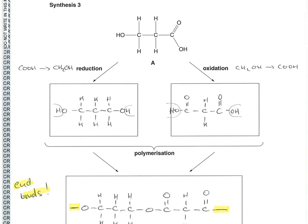Synthesis 3 tells you that starting with molecule A, we're going to reduce it and oxidize it. I've made a little note to myself - when you reduce this molecule, it's this part here that gets reduced, the carboxylic acid group. That's going to turn into this CH2OH group. So this will be the product of the reduction of A.